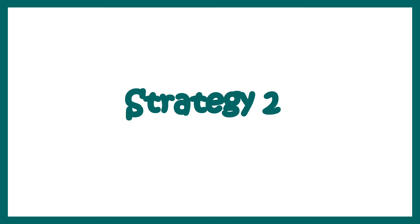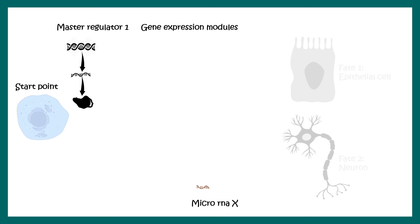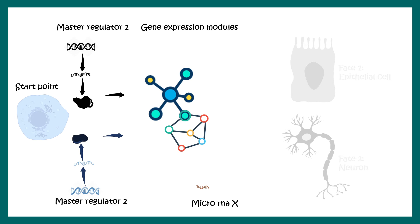There are multiple strategies underlying differentiation; we are looking at a few hand-picked ones. In strategy two, there is a master regulator 1 giving rise to one transcription factor, and a master regulator 2 giving rise to another. This is regulated by microRNA X. All these transcription factors control specific gene expression modules, and these modules suppress each other — which is why in a stem cell state, no particular fate is chosen.